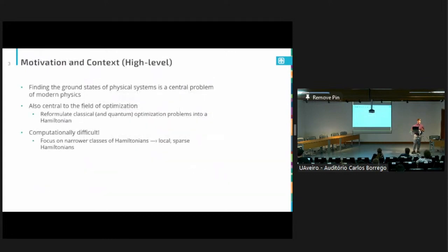This algorithm is also going to work for fermionic and qubit Hamiltonians, which is rare so far in the literature. We can also show that this is optimal in some sense, and I'll get into that a little bit later in the talk. First, a little bit of motivation and context at a very high level. As most, if not all, of us are aware, finding the ground states of physical systems is a central problem of modern physics. It's also central to the field of optimization, and that's because you can reformulate many classical optimization problems into finding the ground state of some Hamiltonian.